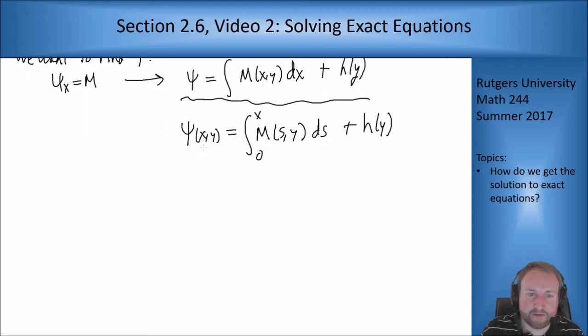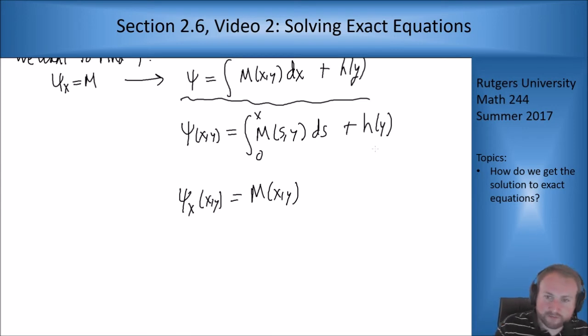So now if I take the x derivative of this function, what do I see? Well I see ψ_x on this side obviously, and I go forward here. Fundamental theorem of calculus tells me the x derivative of this guy is just M(x,y) and this term vanishes. So we're good. We found a function where ψ_x = M(x,y).